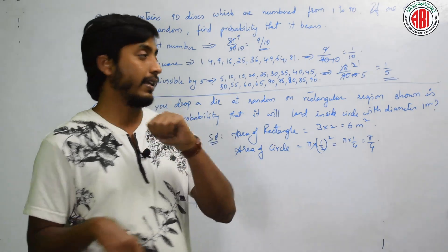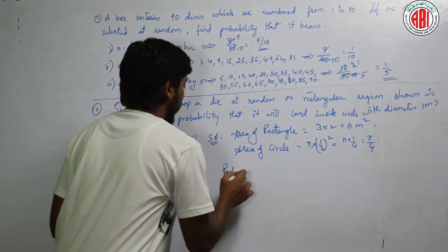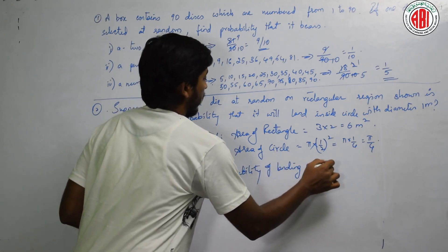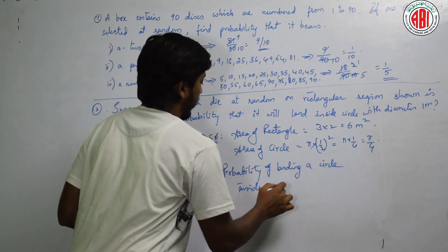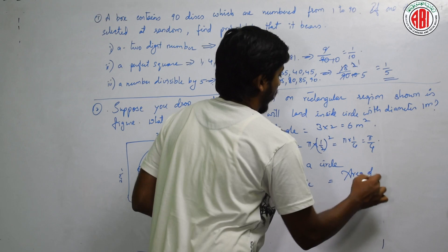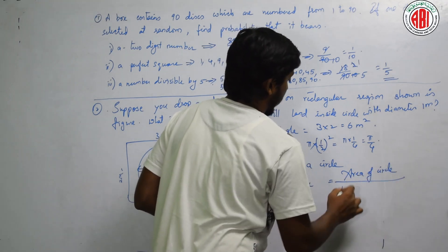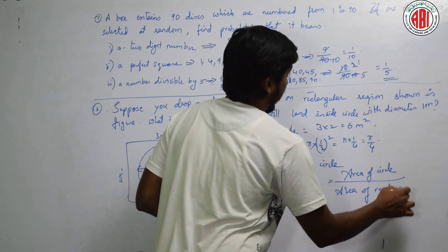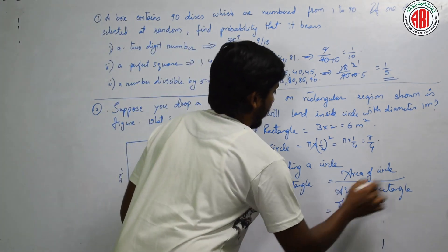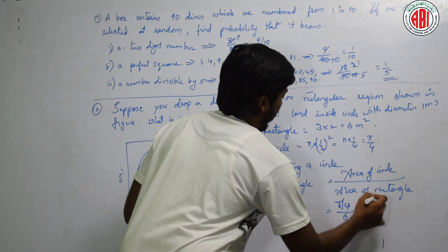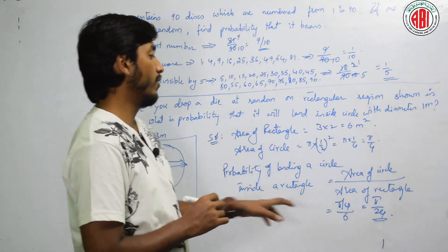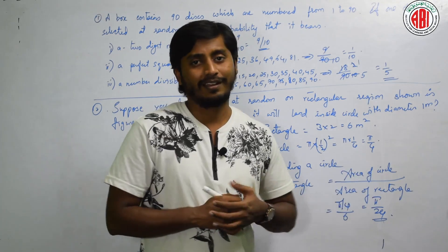Now tell me what is the probability that the circle should be inside a rectangle. Total area is rectangle. Only the possible condition is circle. That is, the probability of landing a circle inside a rectangle is equal to area of circle by area of rectangle. Area of circle is pi by 4. That is pi by 4 divided by area of rectangle is 6. Therefore, you can directly write it as pi by 24. This is the probability.